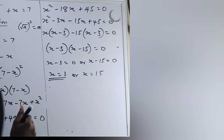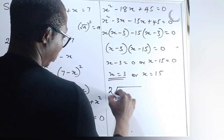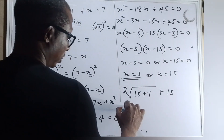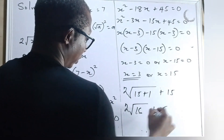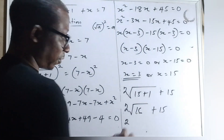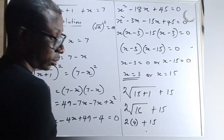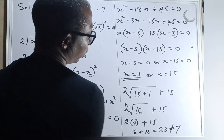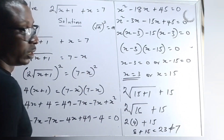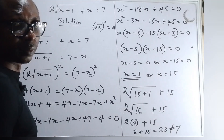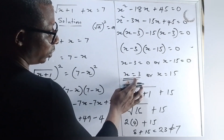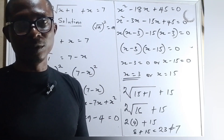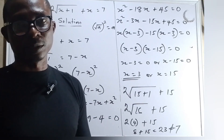Now let's check if 15 is also a solution. We have 2 square root of 15 plus 1 plus 15, that is 2 square root of 16 plus 15. 2 square root of 16 is 8, so that's 8 plus 15 which is 23, not equal to 7. So 15 is not a solution — it's an extraneous solution. The solution to this problem is x equals to 3. Don't forget to share this video with your friends and drop your comments. Thank you for watching.